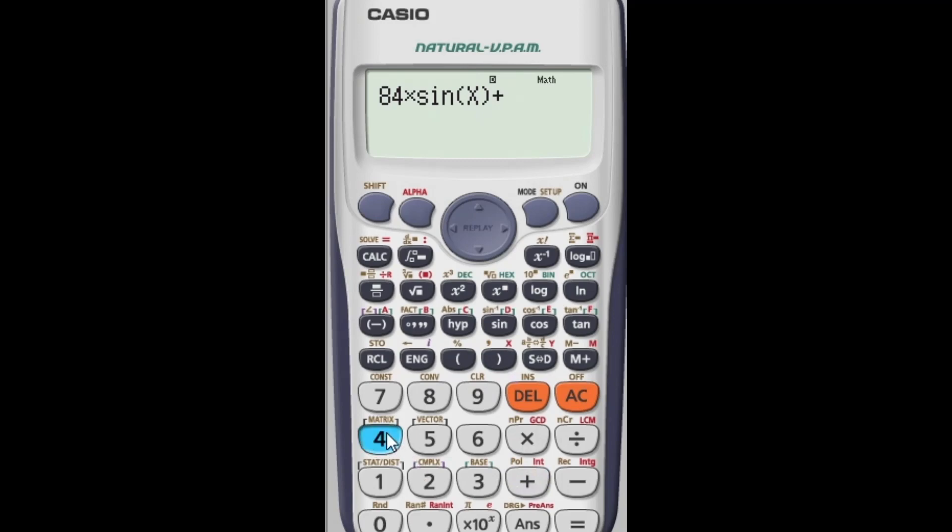Now, plus 48 into 3 cos. Again θ is coming, so we are typing x instead. Close the bracket, minus 1. Now we have to type equal to 0.